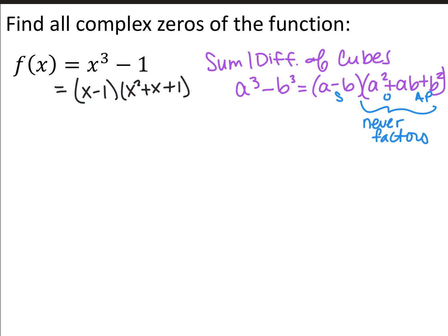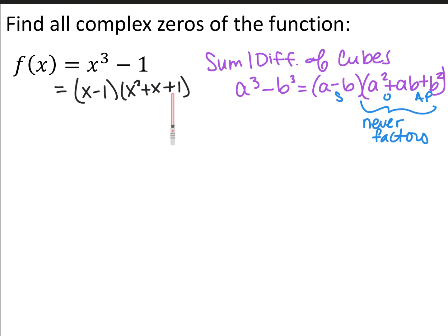Whenever you have a sum or difference of cubes, they factor into the two things that were cubed, then the first thing squared, the two things multiplied together, and the second thing squared. The signs are same sign, opposite sign, always positive. So in this case it's a negative, positive, positive. This back quadratic trinomial will never factor — it's prime. So x cubed minus 1, where 1 is 1 cubed, the two things that were cubed are x and 1. So I have x and 1, then x squared, then 1 times x is x, and 1 squared is just 1, with same sign, opposite sign, always positive.